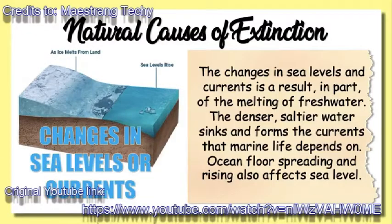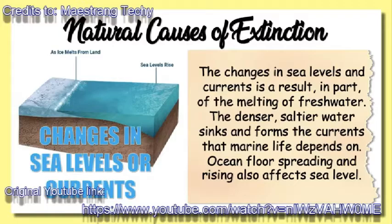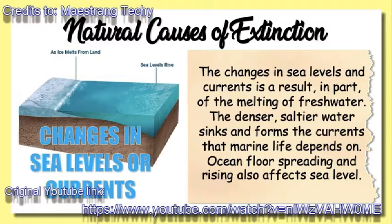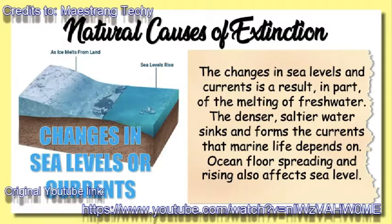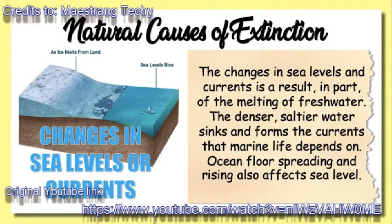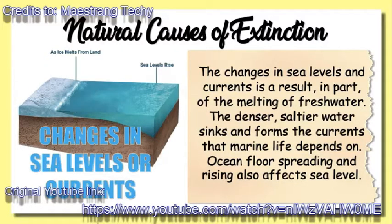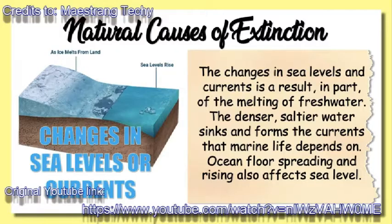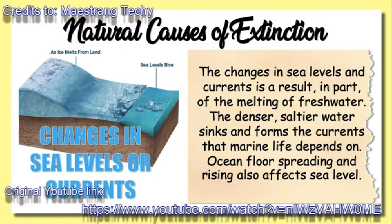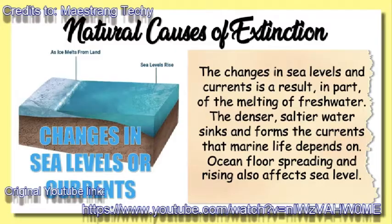Next, changes in sea levels or currents. The changes in sea levels and currents is a result in part of the melting fresh water. The denser, saltier water sinks and forms the currents that marine life depends on. Ocean floor spreading and rising also affects sea level. A small rise in the ocean floor can displace a lot of water onto land that is already occupied. The gases from volcanic activity can also be absorbed by the water, thus changing the chemical composition, making it unsuitable for some life.